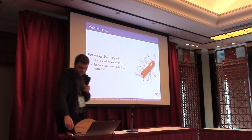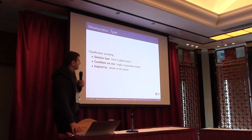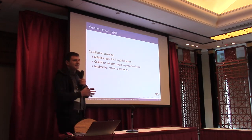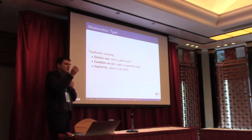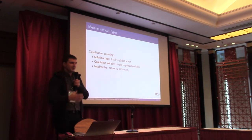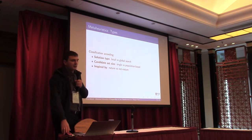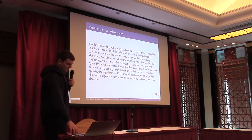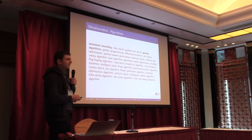There are various classifications of metaheuristics. According to solution type, some try to find a local optimum, some try to find a global optimum. According to candidate set size, we have single-solution and population-based approaches. Single-solution metaheuristics work with one candidate solution through iterations; population-based metaheuristics work with a set of solutions. Most metaheuristics are inspired by natural phenomena, though some are not. We'll focus on two famous ones: simulated annealing and genetic algorithms.